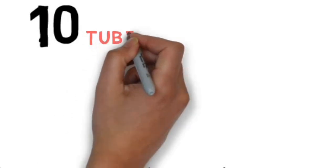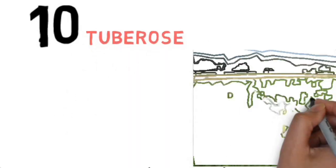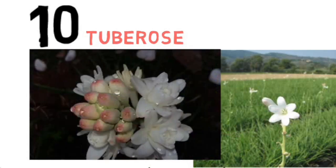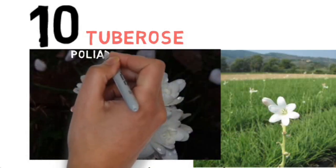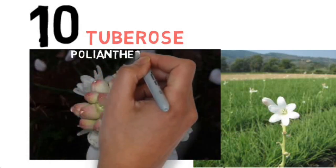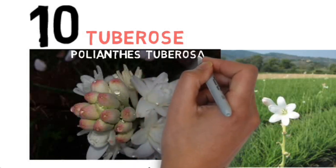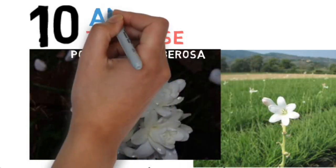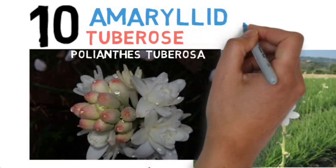Next is tuberose. Its scientific name is Polianthes tuberosa and it belongs to the family Amaryllidaceae.